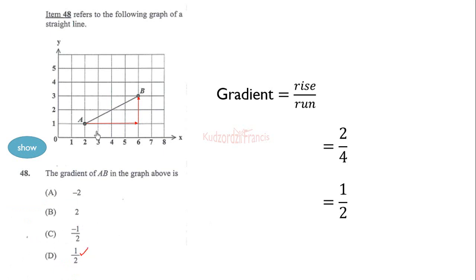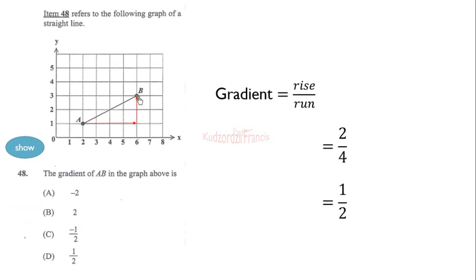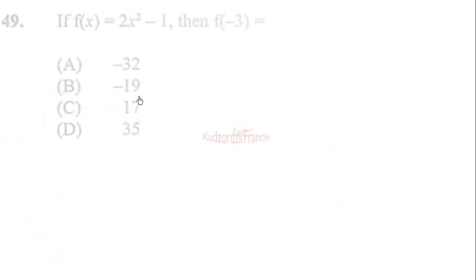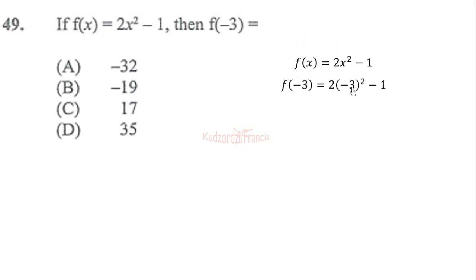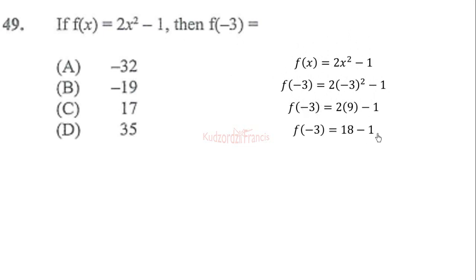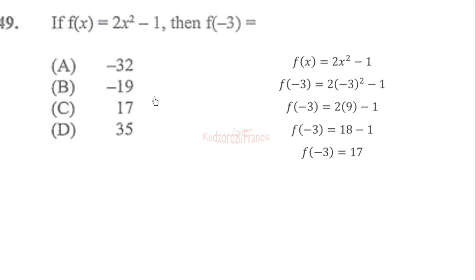Note that rightward and upward directions are positive. If f(x) = 2x² − 1, then f(−3) requires substituting negative three: 2 times (−3)² minus one equals 2 times nine minus one, which is 18 minus one, giving 17. So the correct choice is 17.